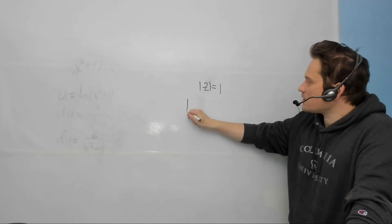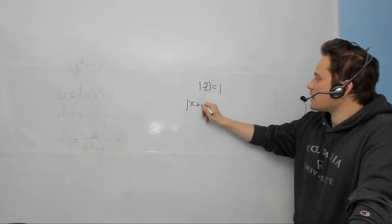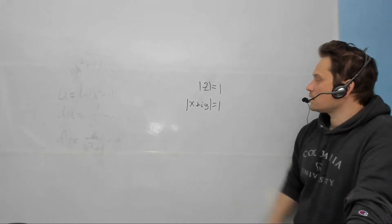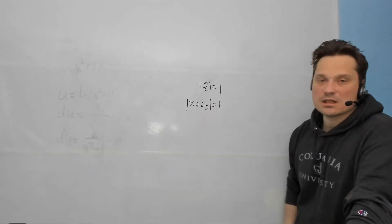So the first stage would be simply to replace this with x plus i, y, and the whole thing is still equal to 1. That's the definition of z for x and y.